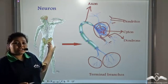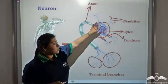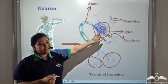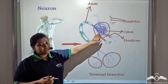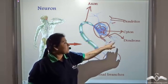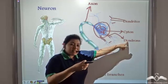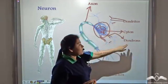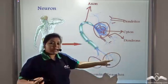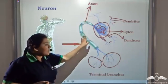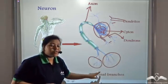So a neuron has a cyton or the cell body which contains all the cellular organelles and the cytoplasm. It has processes, thicker processes known as the dendrons, thinner processes known as the dendrites. And one such dendron elongates to form the axon and the axon ends in these terminal branches.